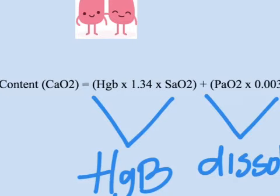When looking at the amount of oxygen bound to hemoglobin, there are three primary factors we need to consider. First, how much hemoglobin do we even have? This makes a lot of sense because we know that hemoglobin molecules are the boxcars of oxygen, responsible for transporting and unloading oxygen to target tissues.